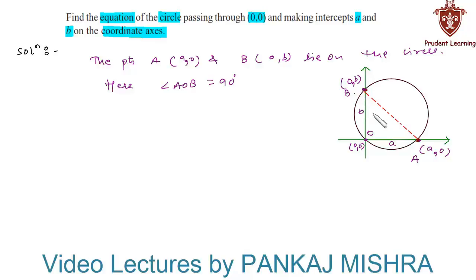If we join the points A and B, then the line AB is nothing but the diameter of the circle. So using diameter form...